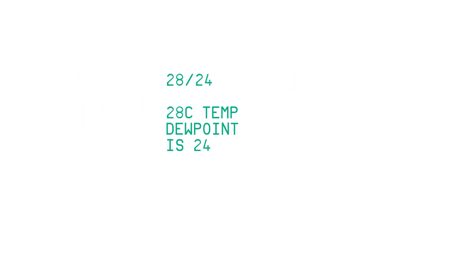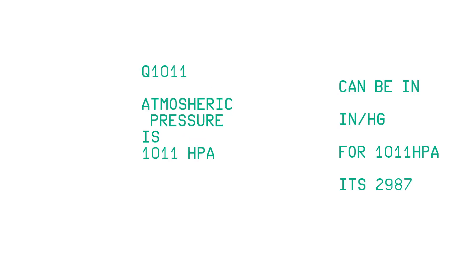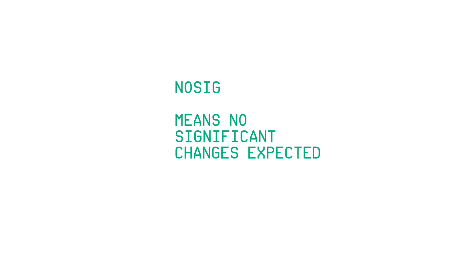FEW017 means few clouds at 1700 feet. BKN150 means broken clouds at 1500 feet, and there are also a lot of different notations — you can read more about this below. 28/24 means 28 degrees Celsius temperature and 24 degrees Celsius dew point. Q1011 is atmospheric pressure in hectopascals, and it can also be expressed in inches of mercury. NOSIG means no significant changes expected over the next few weather reports.